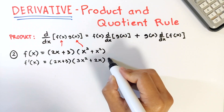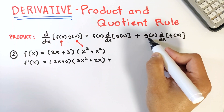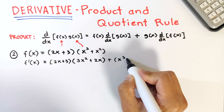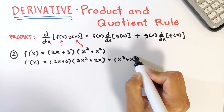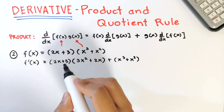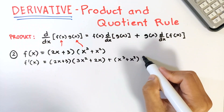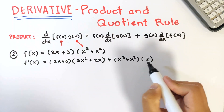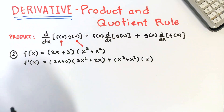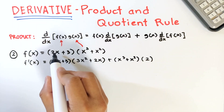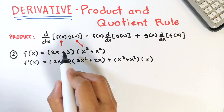Then plus, copy g which is x cubed plus x squared, and differentiate f. The derivative of 2x is 2 and the derivative of 3 is 0, so the derivative of 2x plus 3 is 2. Using the power rule, the derivative of x is 1 times 2 equals 2, and the derivative of a constant is 0.